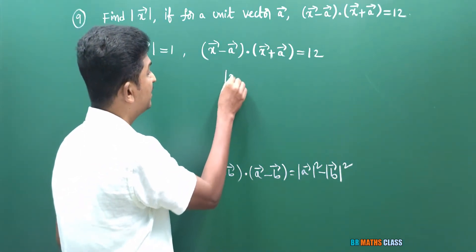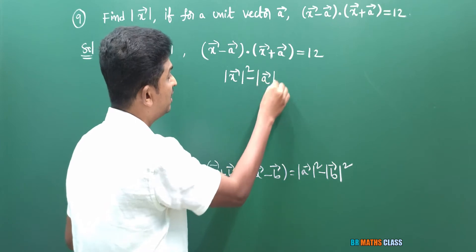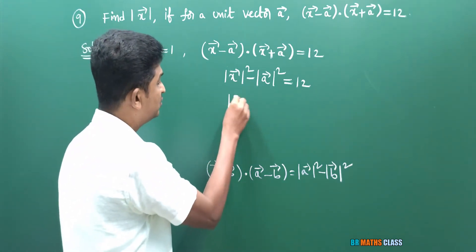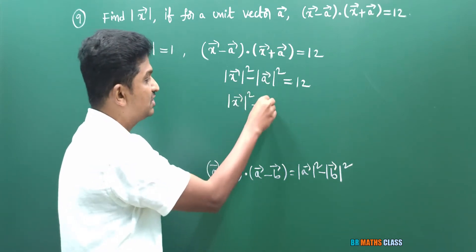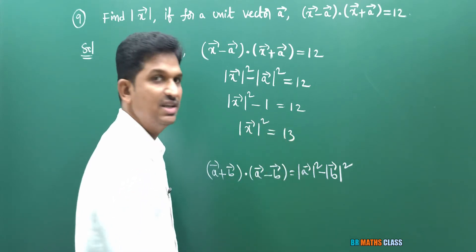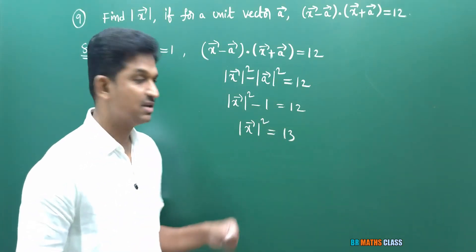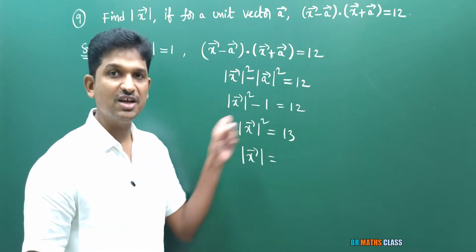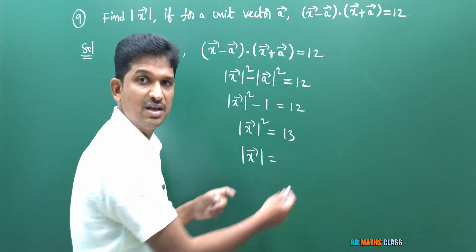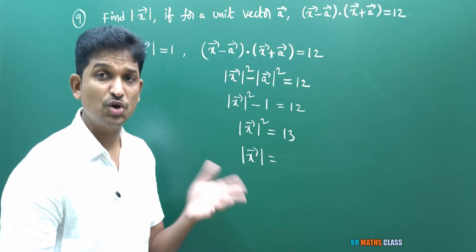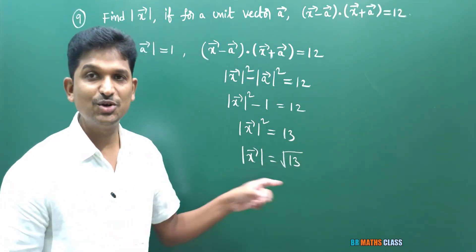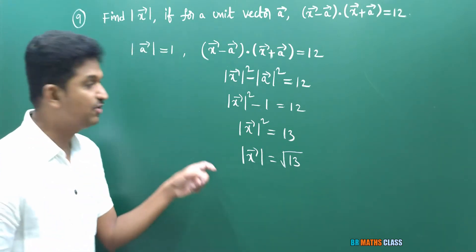Since |A̅| = 1, we have |X̅|² − 1 = 12, so |X̅|² = 13. Applying square root on both sides — magnitude is always positive — so magnitude of X̅ is √13.